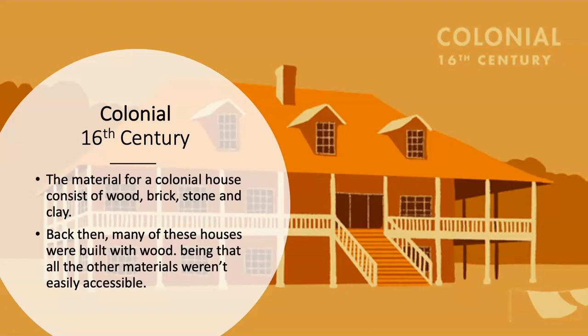The colonial houses of the 16th century. The materials consisted of wood, brick, stone, and clay. Many of these houses were built with wood because all materials weren't easily accessible — transportation by train or horse meant you couldn't simply order materials for next-day delivery. But these houses were still lavishly built and very nice.